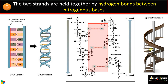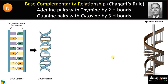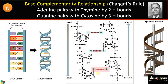Point number seven concerns base complementarity, as proposed by Chargaff. Watson and Crick got the idea of base pair orientation from Chargaff's rule: adenine always pairs with thymine by two hydrogen bonds, whereas guanine always pairs with cytosine by three hydrogen bonds. This also helped Watson and Crick explain the DNA copying mechanism.